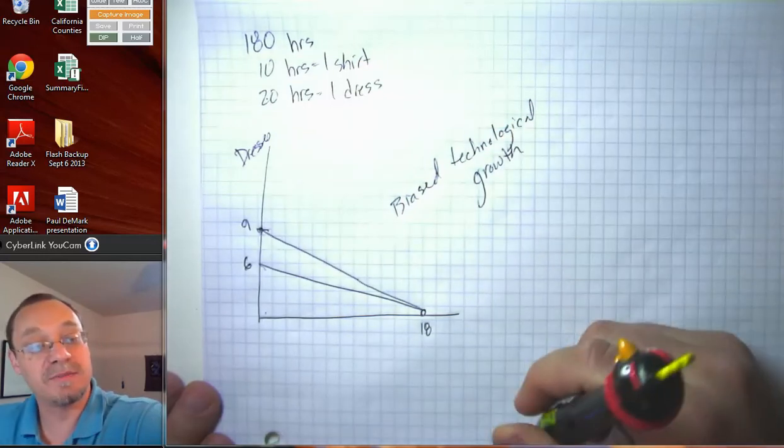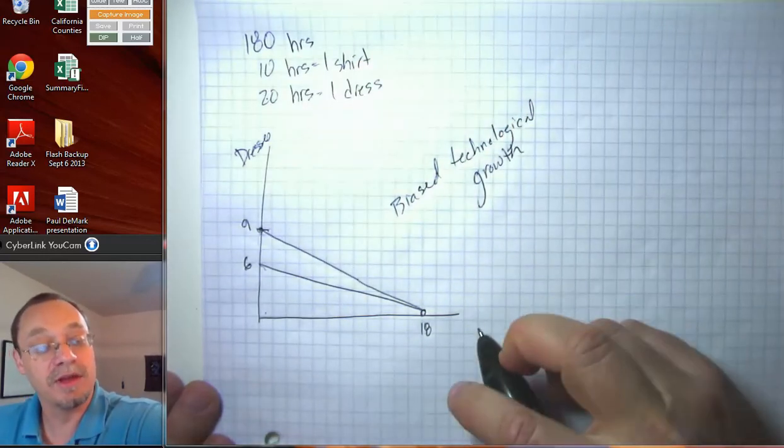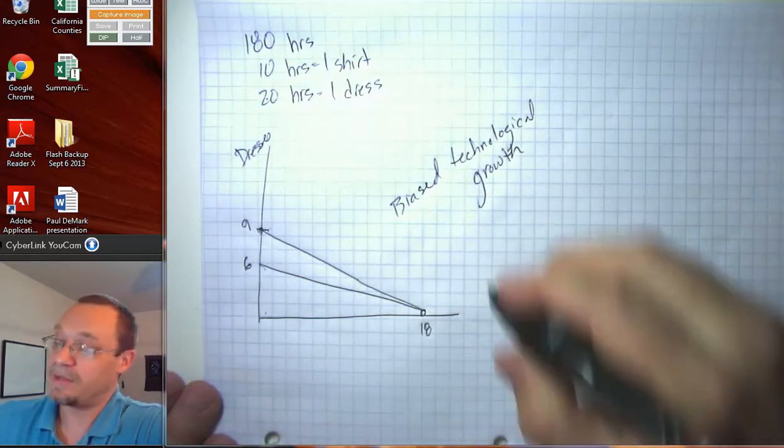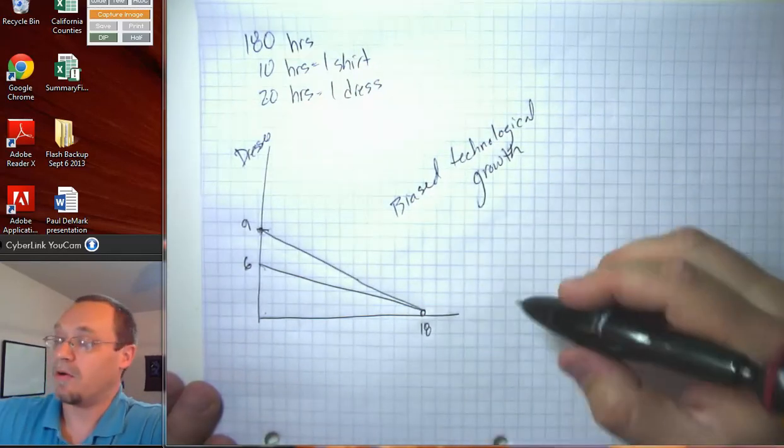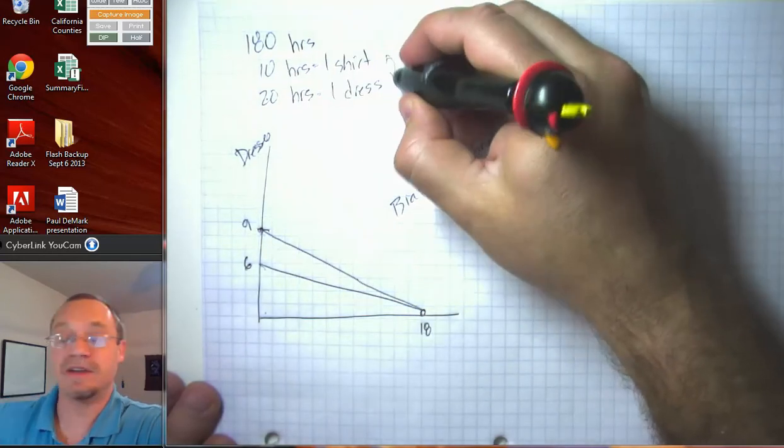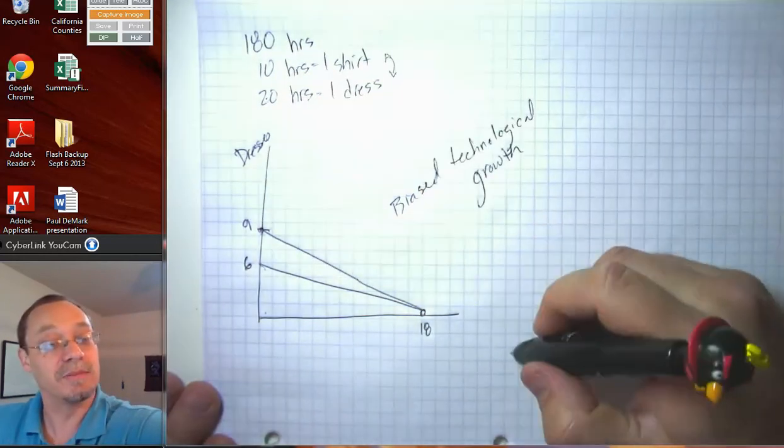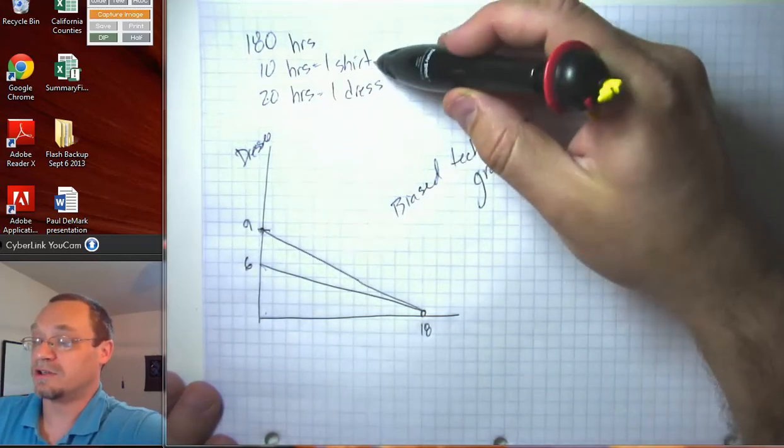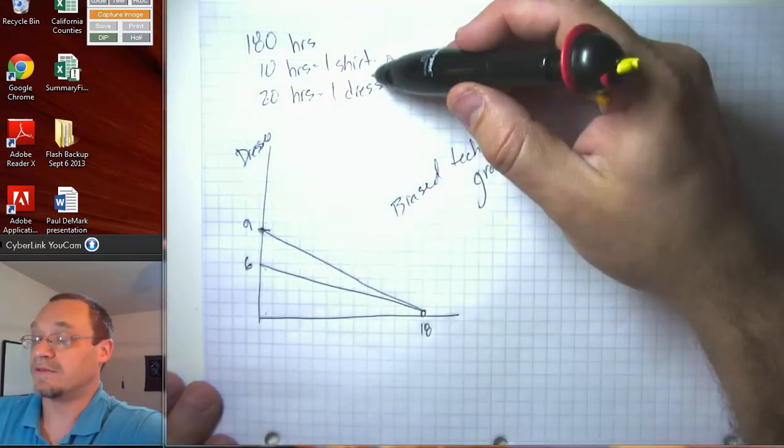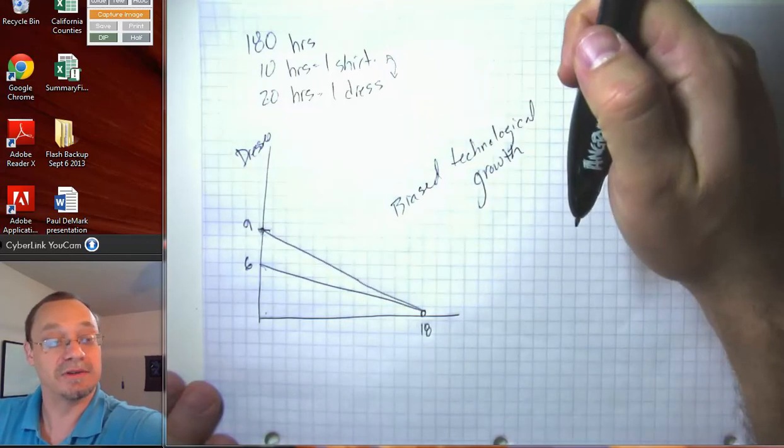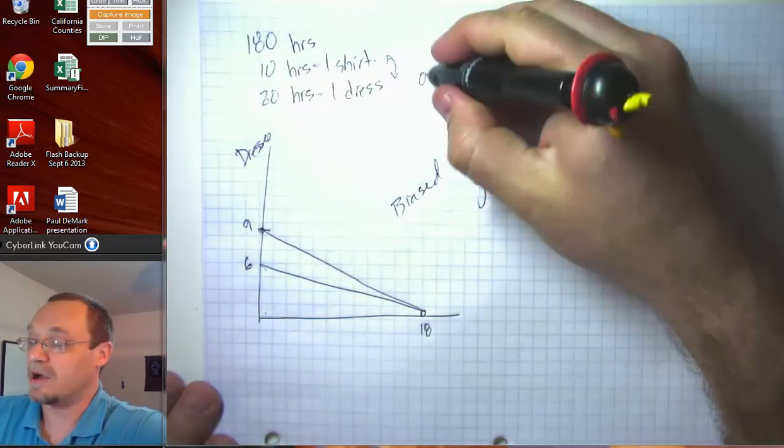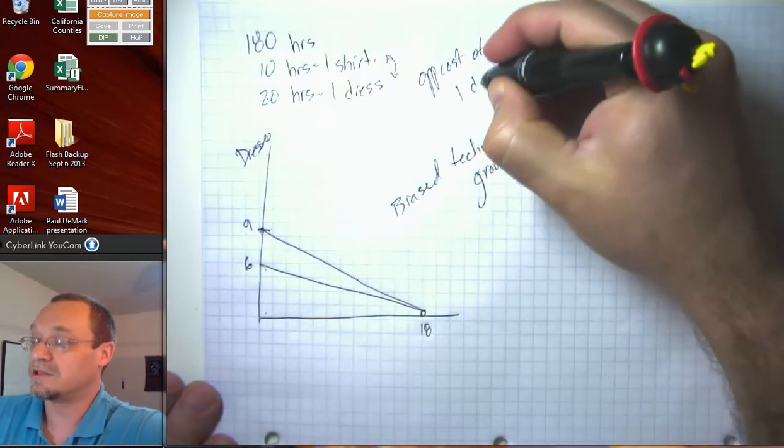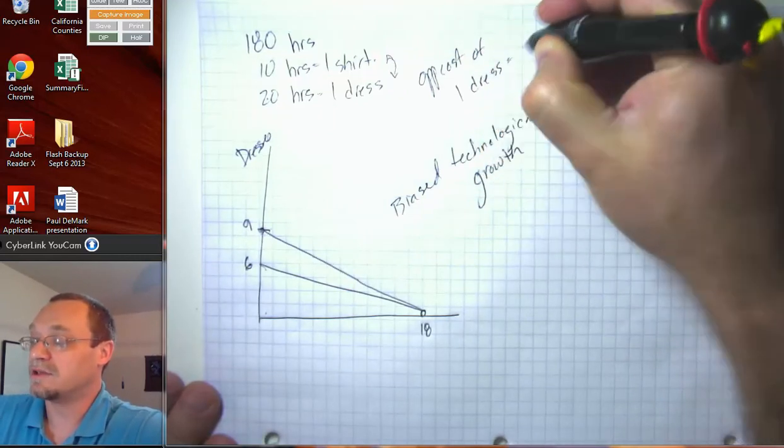And notice, this biased technological growth changes the opportunity cost of the two different goods, because it changes the slope. Or, put differently, it changes the ratio here between these two different numbers. We used to have the opportunity cost of one shirt of, excuse me, of one dress was three shirts. Now, the opportunity cost of one dress is two shirts.